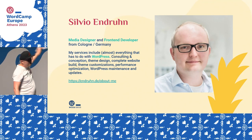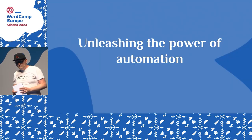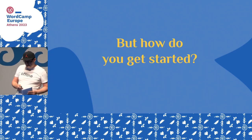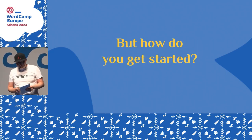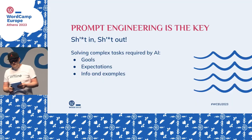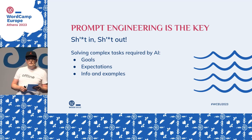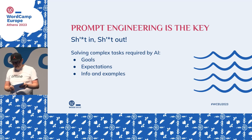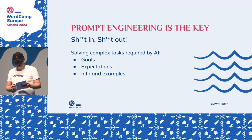All about me you can find on my website. Now, let's talk about the power of automation — but how do we start it? Shit in, shit out. This is important for the use of AI. For solving complex tasks, artificial intelligence needs the right pieces of information.